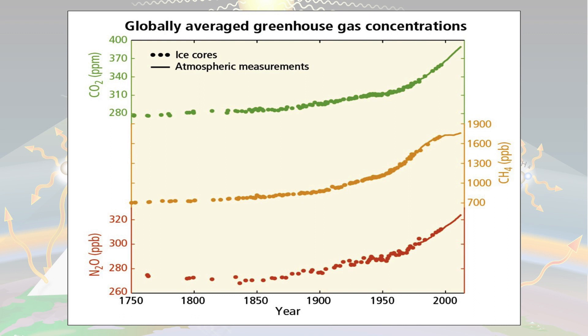Before the industrial revolution, carbon dioxide concentration was almost stable, operating around 280 parts per million. Now the concentration has drastically increased and is going to cross even 410 parts per million — a 40 percent increase since the industrial revolution. That increase is tremendous and is basically because of human action.